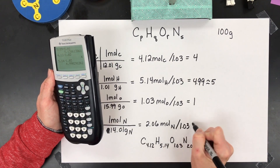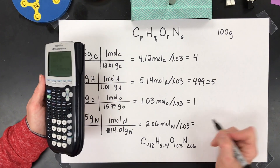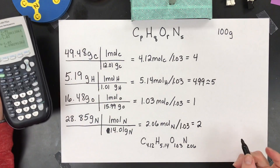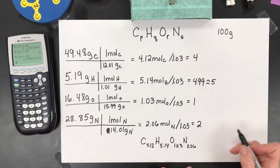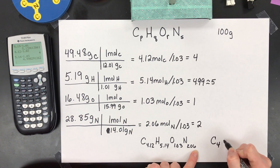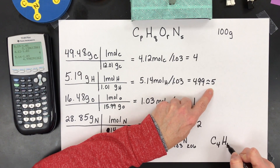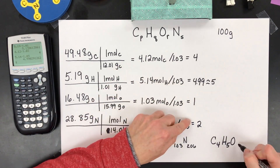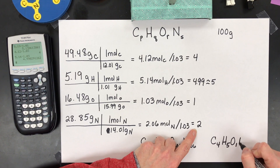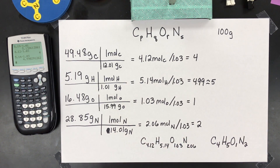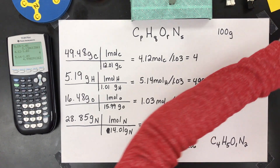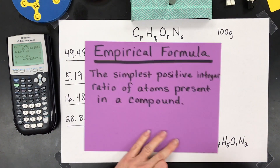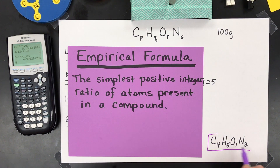Dividing oxygen by 1.03 gives basically 1.99, or 2. And nitrogen divided by 1.03 gives us 1. So the formula so far is C4, H5, O1, N2. This is an empirical formula — the lowest ratio of all of them. But we're probably not done.